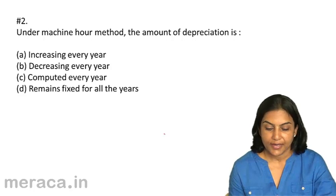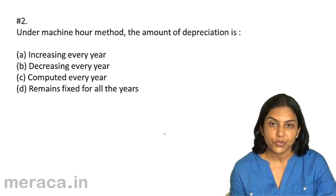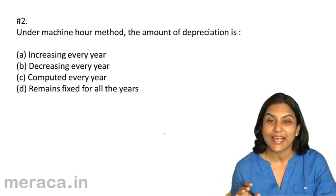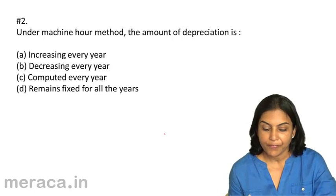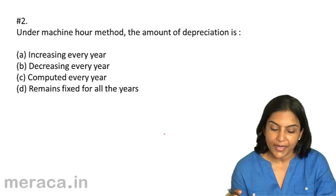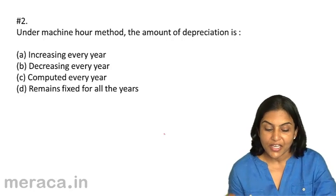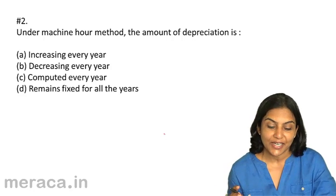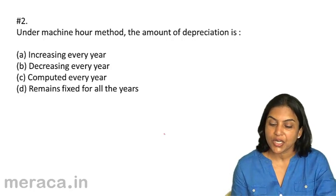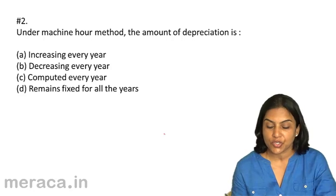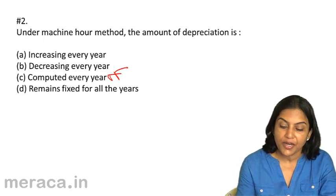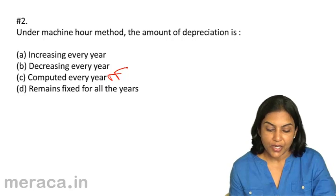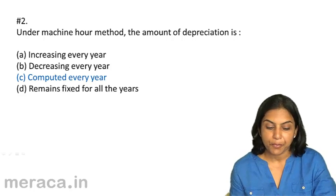Under the machine hour method, how do we compute depreciation? Under this method, the life of the machine is determined by the estimated number of machine hours. Therefore, total depreciable amount divided by the number of estimated machine hours gives us the rate per hour. The rate per hour multiplied by the number of hours worked is the depreciation we compute. Therefore, under the machine hour method, the amount of depreciation has to be computed every year depending on the number of hours worked. The correct answer is 2C — computed every year.